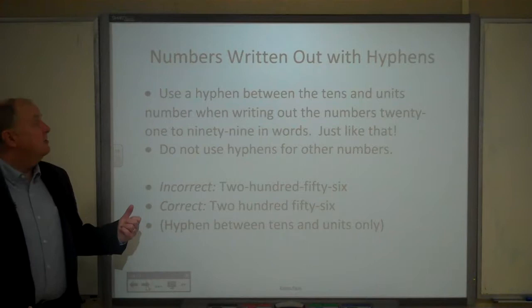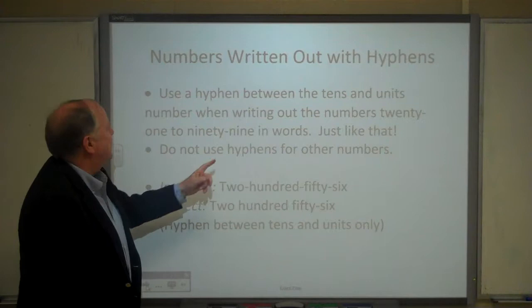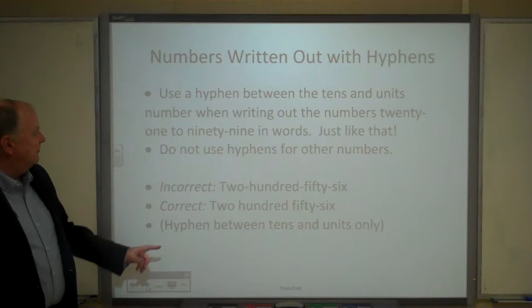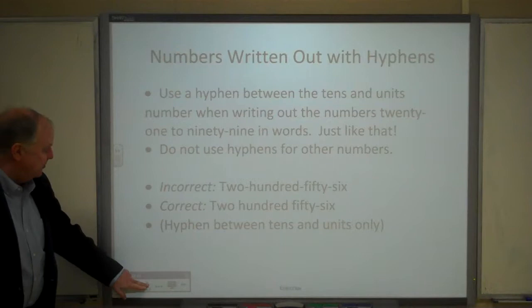You use a hyphen between tens and units numbers when you write the numbers out using letters, but only for numbers 21 to 99. So twenty-one, ninety-nine. You don't use hyphens in other numbers. For example, 256 written correctly would be two hundred fifty-six. So hyphens only between the tens and the units.